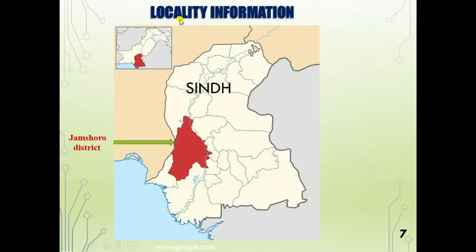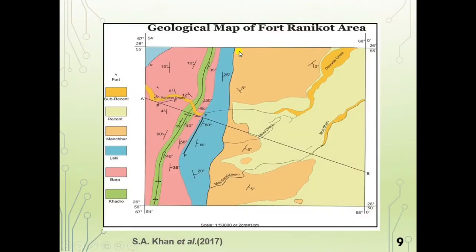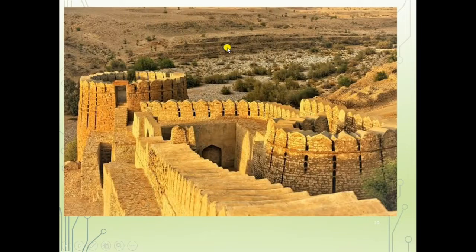The research area is located in district Jamshoro, Sindh, Pakistan. This slide shows the Ranikot area. The name of this rocky fort area is Ranikot, which has great historical value. This is the geological map of Ranikot. Some views from this beautiful historical place, the Ranikot Fort area — there is a great wall just like China's Great Wall.